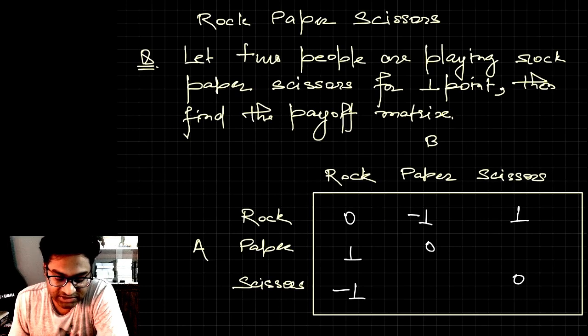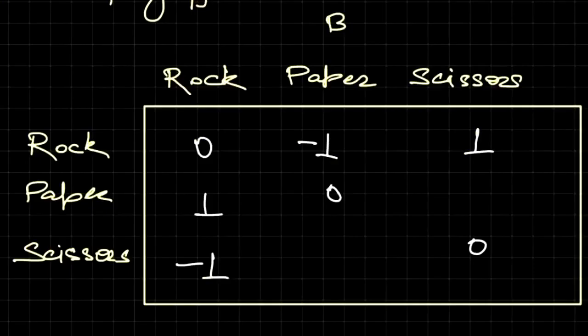If player A is using scissors and player B is using paper, scissors will cut the paper so player A will win and get one point. On the symmetric position, player A will get minus one point. This is the payoff matrix for a rock paper scissors game.